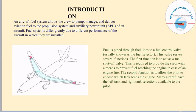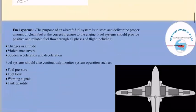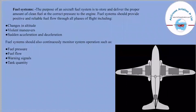Many aircraft have left tank and right tank sections available to the pilot. The purpose of an aircraft fuel system is to store and deliver the proper amount of clean fuel at the correct pressure to the engine. Fuel systems should provide positive and reliable fuel flow through all phases of flight, including changes in altitude, violent maneuvers, and sudden acceleration and deceleration. The fuel system should also continuously monitor system operations such as fuel pressure, fuel flow warning signals, and tank quantity.